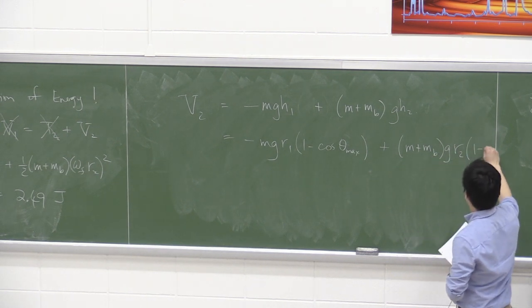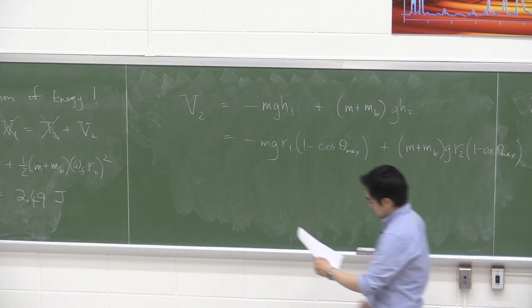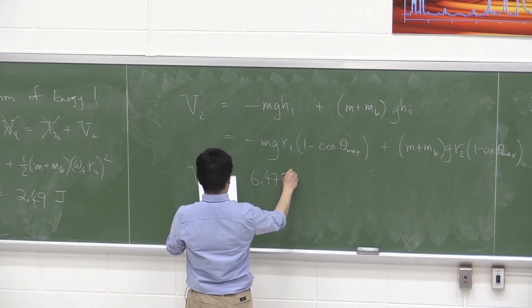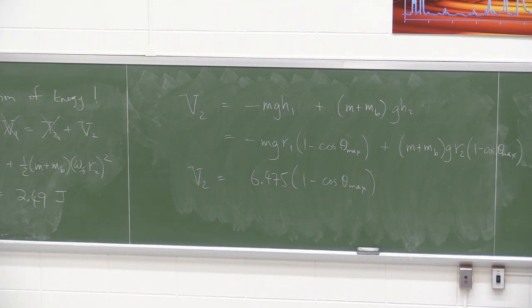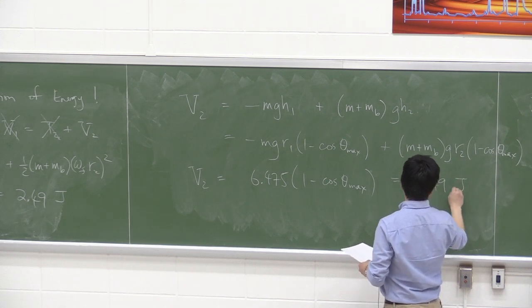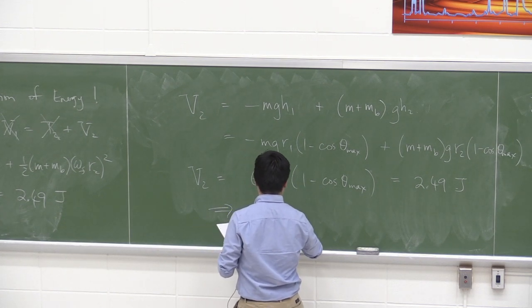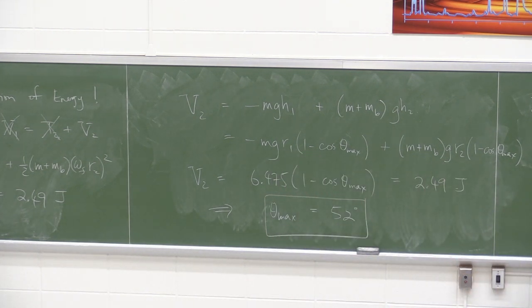Combining: 6.475 times (1 minus cosine theta max) equals 2.49 joules. Solving gives theta max equals 52 degrees.